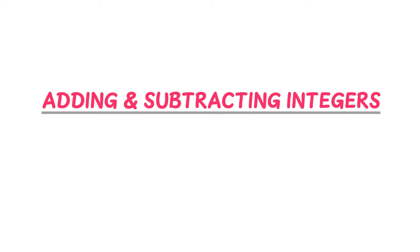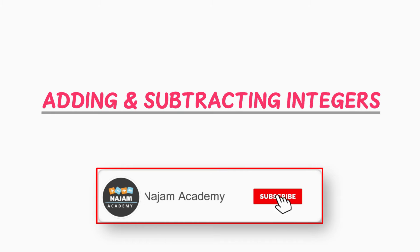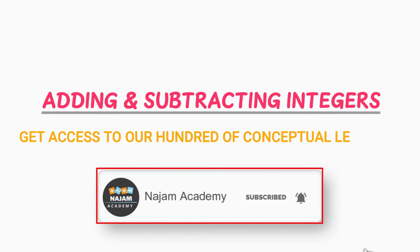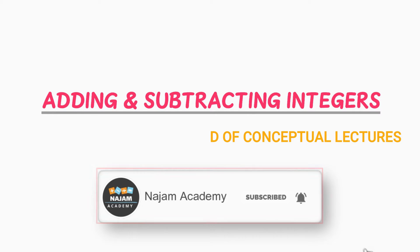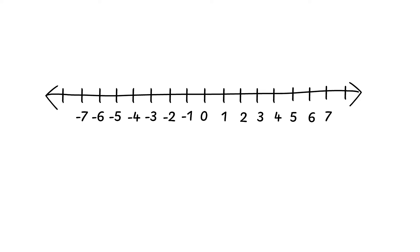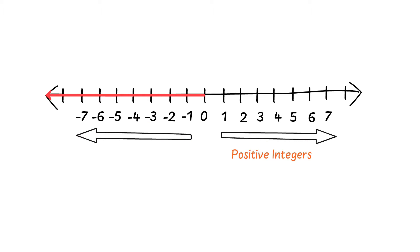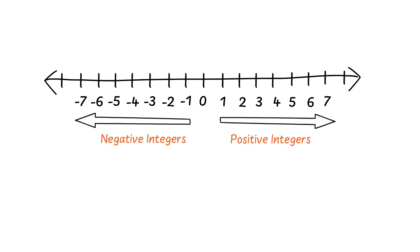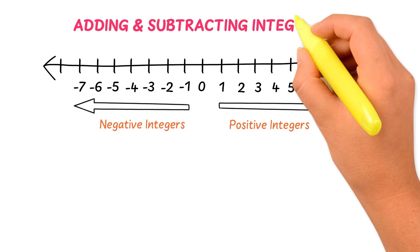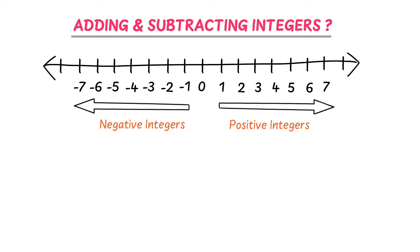Adding and Subtracting Integers. Before starting the lecture, click on the subscribe button and get access to our hundreds of conceptual lectures for free. In the previous videos, we have learned all about the number line. At the right side of zero, we have positive integers, and at the left side of zero, we have negative integers. Now, how can we add or subtract integers using a number line?